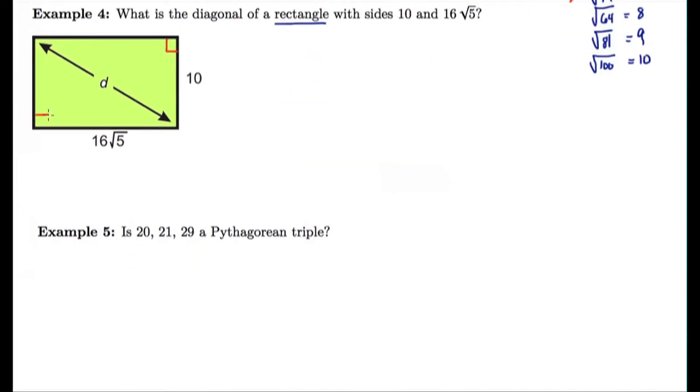Example 4. What is the diagonal of a rectangle with sides 10 and 16 root 5? Well, the diagonal is going to split the rectangle into two halves and will, in fact, be the hypotenuse of both of these triangles. So the sides of the rectangles end up being the legs of the triangle, and the diagonal is the hypotenuse. So I can use the Pythagorean theorem here to find the diagonal D.